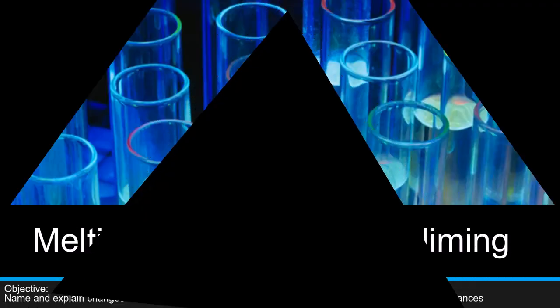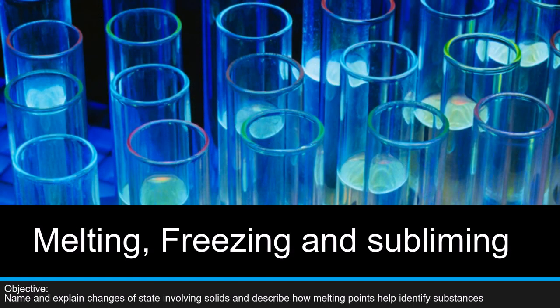As-salamu alaykum and a very good morning to all. I hope you're doing well. Today we're going to be talking about our next chapter from our book Secondary Chemistry. It's chapter 1.4 — we won't be doing 1.3 because we are not covering that in our syllabus for grades 5, 6, and 7. So we're starting with 1.4: melting, freezing, and subliming. Our objective for this lesson is to name and explain changes of state involving solids, and describe how melting points can help identify substances.